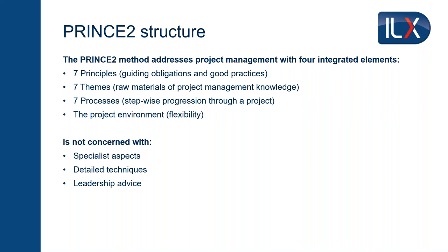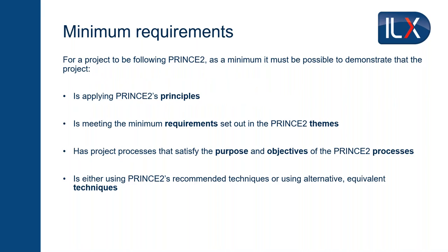One thing seen in the past was that organisations adopted PRINCE2 and got what's called PINOT — PRINCE2 In Name Only. We say we're using PRINCE2 but not actually using much of it. So the PRINCE2 manual suggests there are some minimum requirements. If you're going to run a PRINCE2 project, you have to do certain things. You must be doing the seven principles to show minimum requirements. For each of the themes there are some minimum requirements, generally about having enough to control the elements of a smallest project.